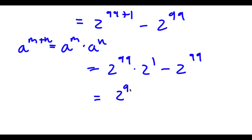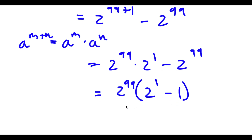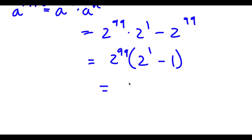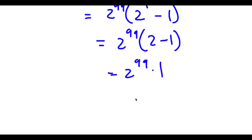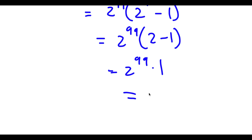So now I have 2 to the power of 99 times 2 to the power of 1 minus 1. 2 to the power of 1 is the same thing as 2. So now I have 2 to the power of 99 times 2 minus 1. 2 minus 1 is equal to 1, so I have 2 to the power of 99 times 1. And anything times 1 is itself, so I'm simply left with 2 to the power of 99.